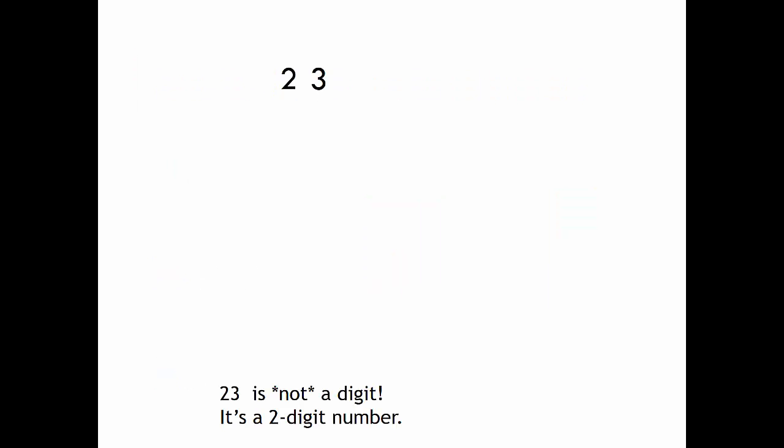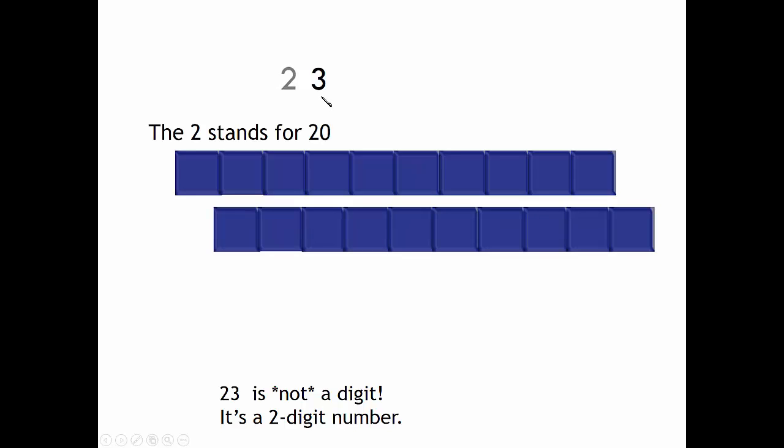Twenty-three is not a digit. It's a two-digit number. The number stands for an amount. The two stands for twenty. Three stands for three.